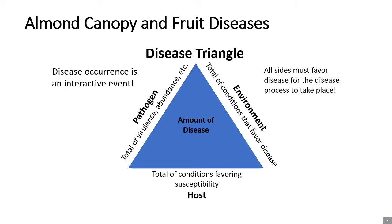The area of the triangle represents the amount of disease to expect. All three sides must be present for disease to occur. If one side is not present, disease will not occur. If one side is larger or enlarged, then the amount of disease will be increased within those given conditions.